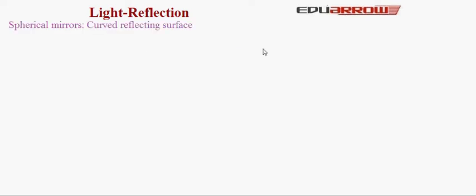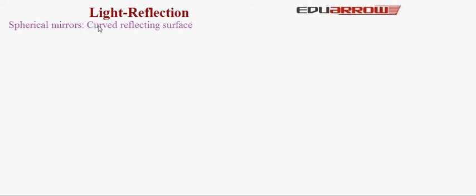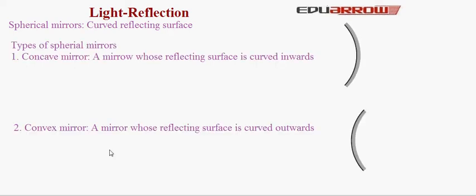Let us now discuss spherical mirrors. When the reflecting surface is plane then it is known as planar. Similarly, when a curved reflecting surface is there then it is known as a spherical mirror. There are two types of spherical mirrors. The first is concave mirror — a mirror whose reflecting surface is curved inwards. The second is convex mirror — a mirror whose reflecting surface is curved outwards.